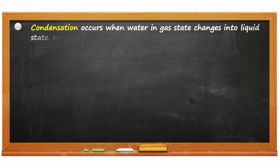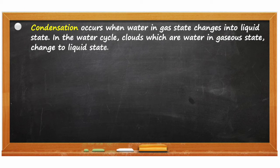Condensation occurs when water in gas state changes into liquid state. In the water cycle, clouds which are water in gaseous state, change to liquid state.